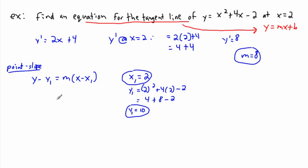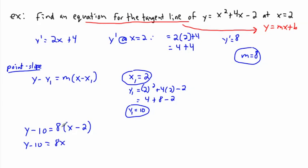Now I have everything: Y1 = 10, M = 8, X1 = 2. Plugging into point-slope form: Y minus 10 equals 8 times (X minus 2). Expanding: Y minus 10 equals 8X minus 16. Moving the minus 10 to the right gives Y equals 8X minus 16 plus 10, which is Y equals 8X minus 6.